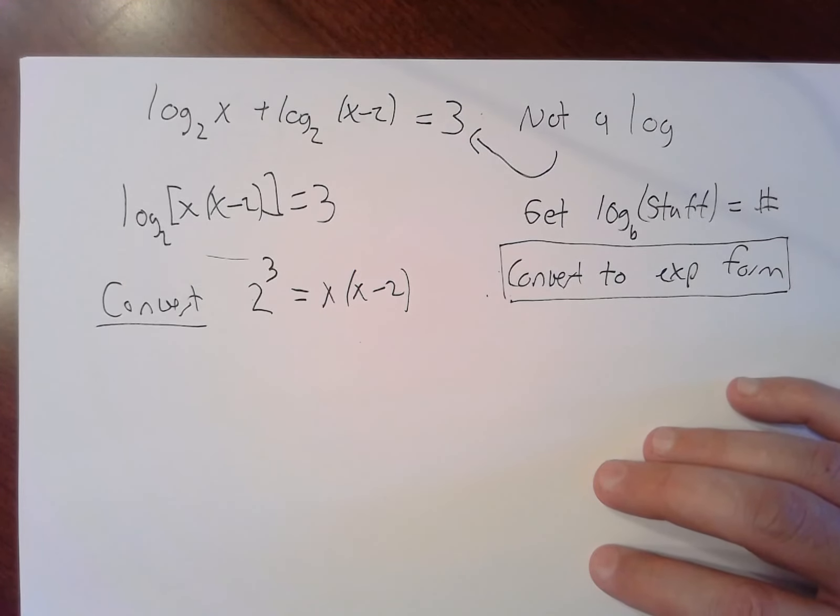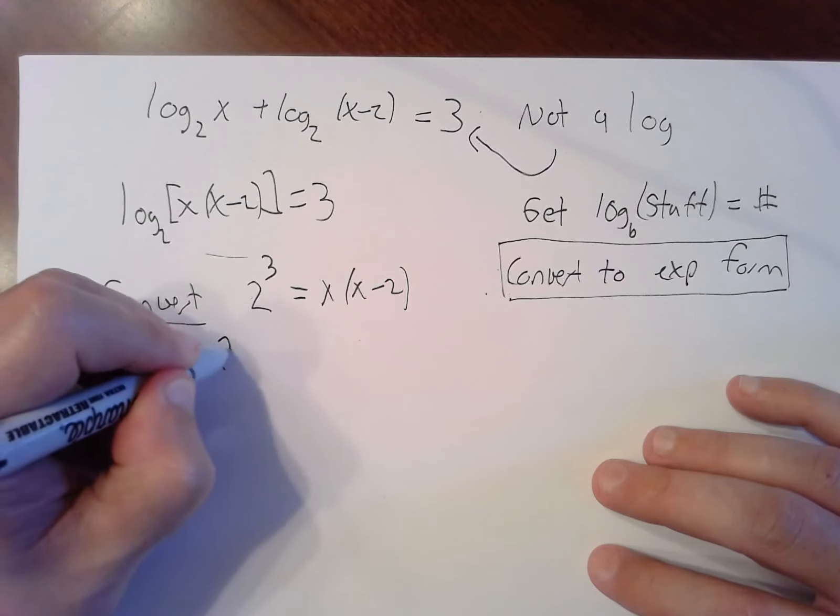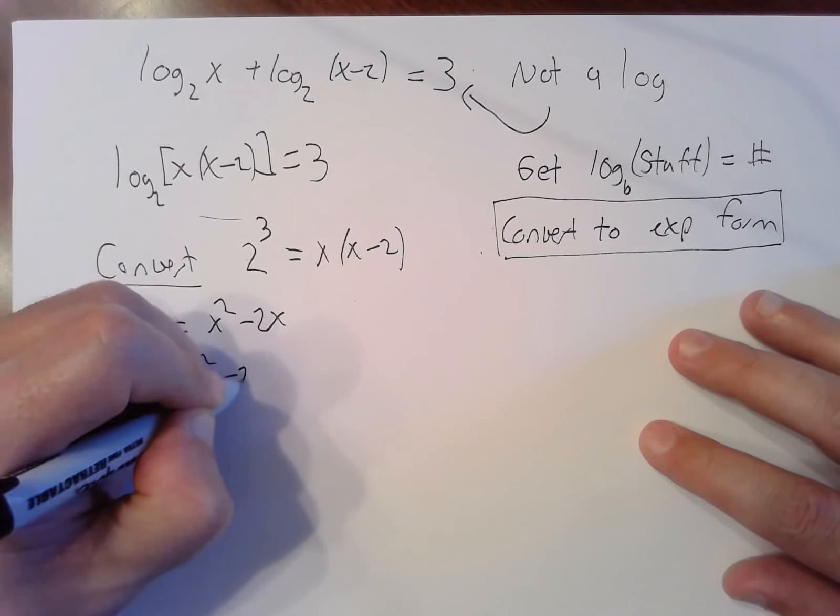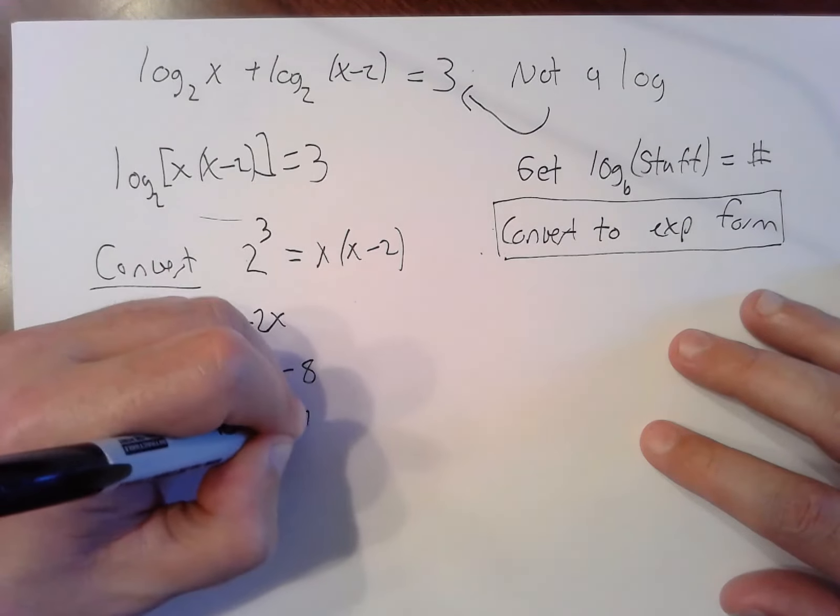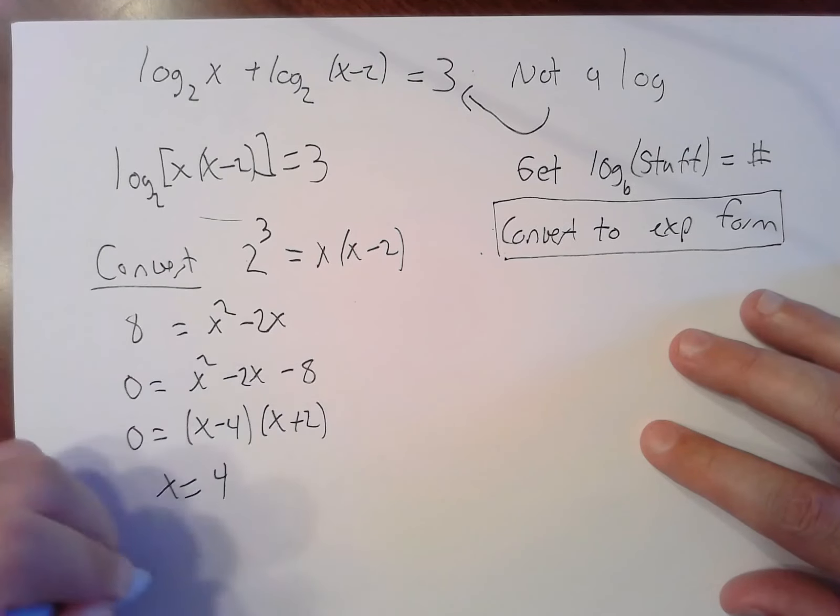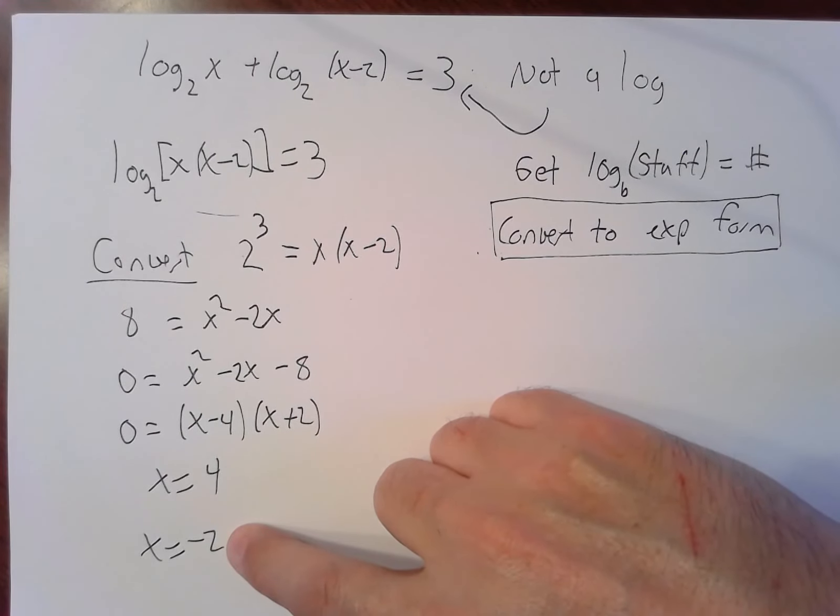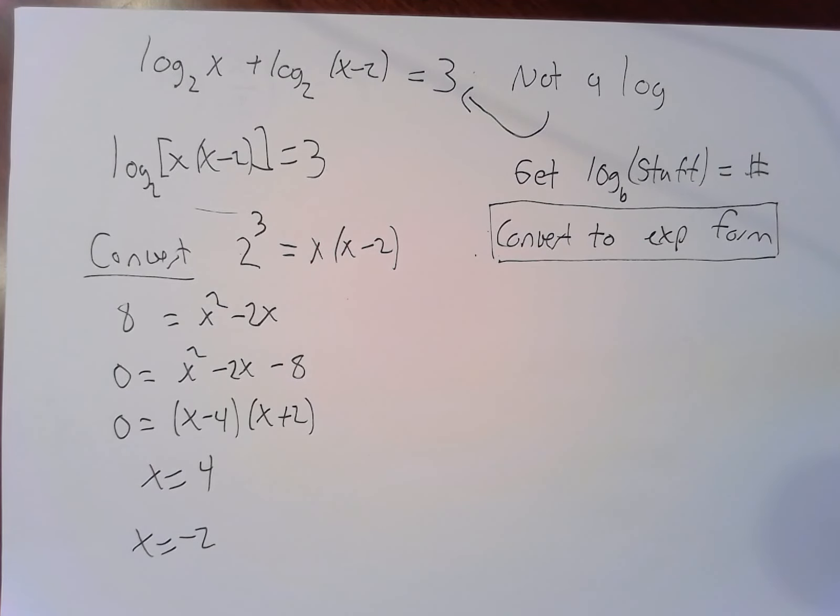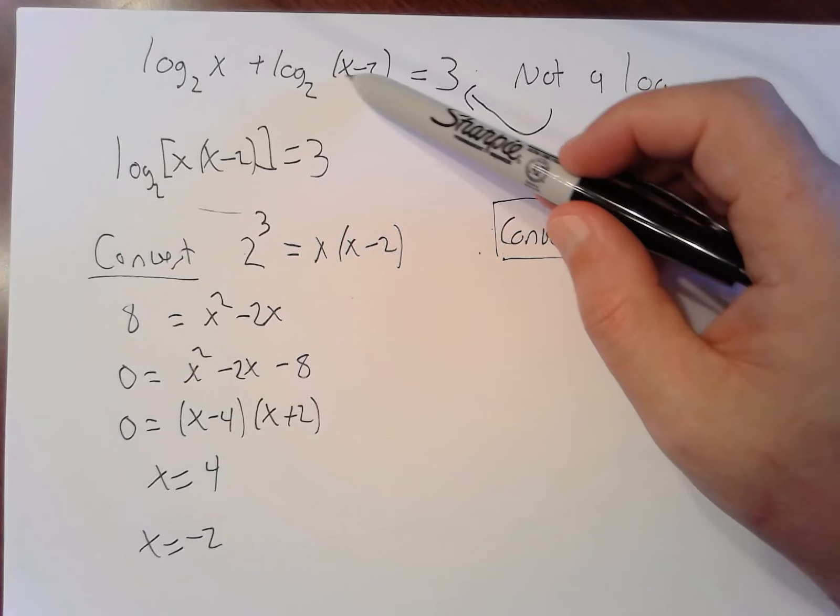That looks complicated but it's really not. That's just a quadratic. 2 to the third is 8. Let's distribute over here. We've got x squared minus 2x. That's a quadratic. It's going to factor, so I'm going to get everything on one side. And that factors. I think that's x minus 4 times x plus 2 equals 0. So we get two solutions: 4 and negative 2.